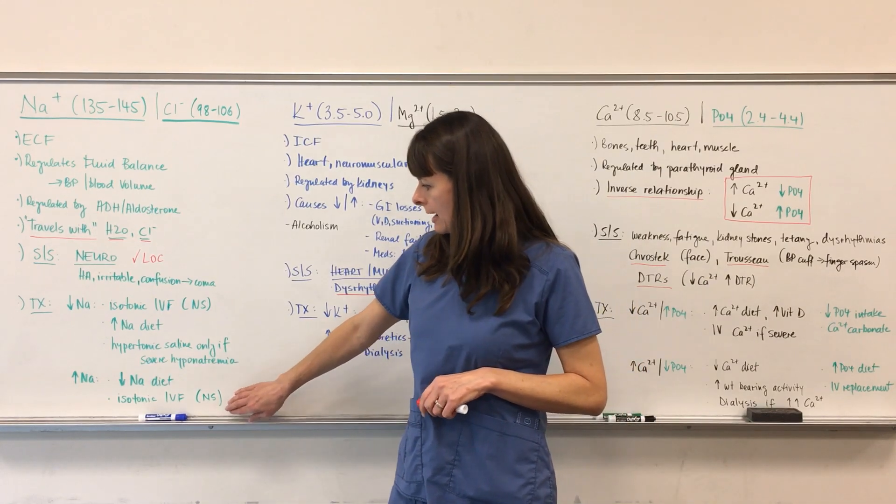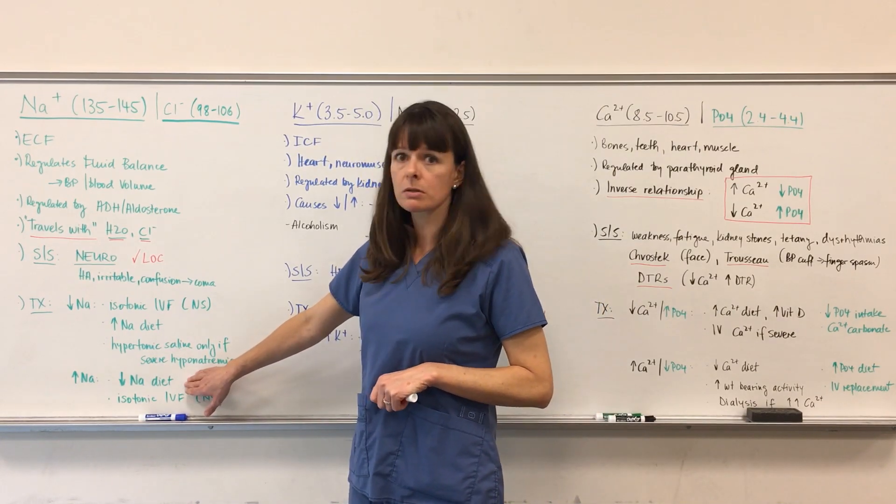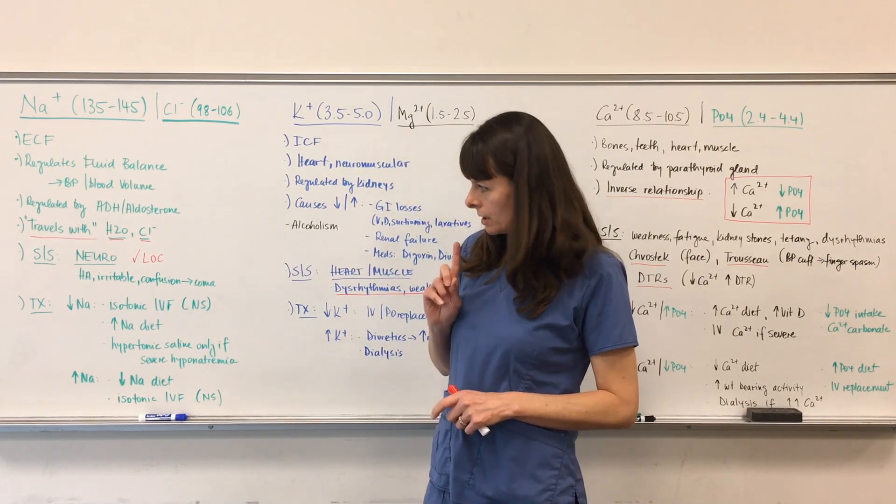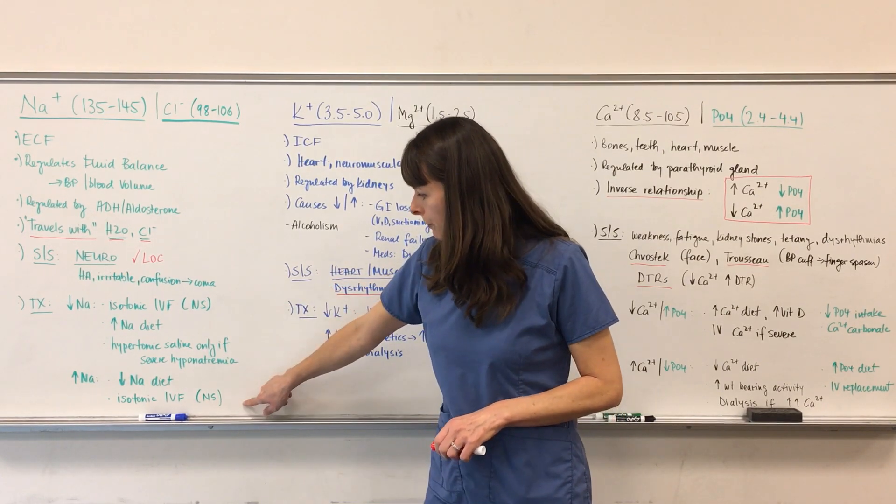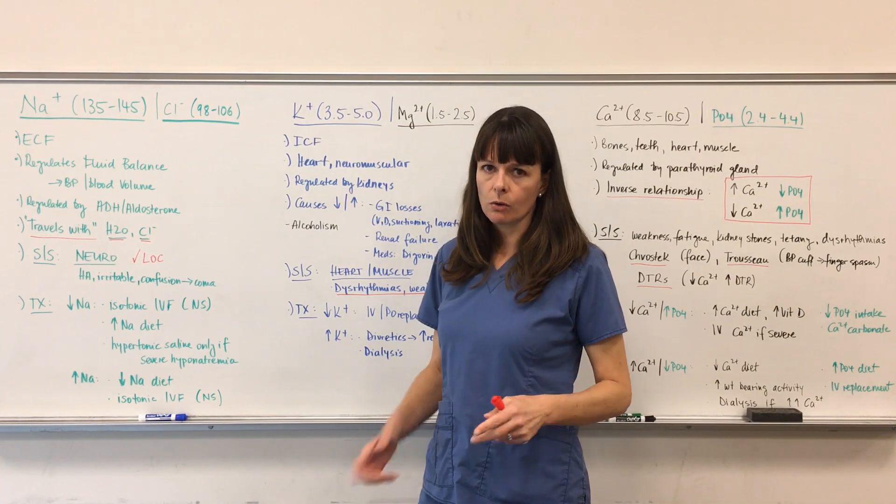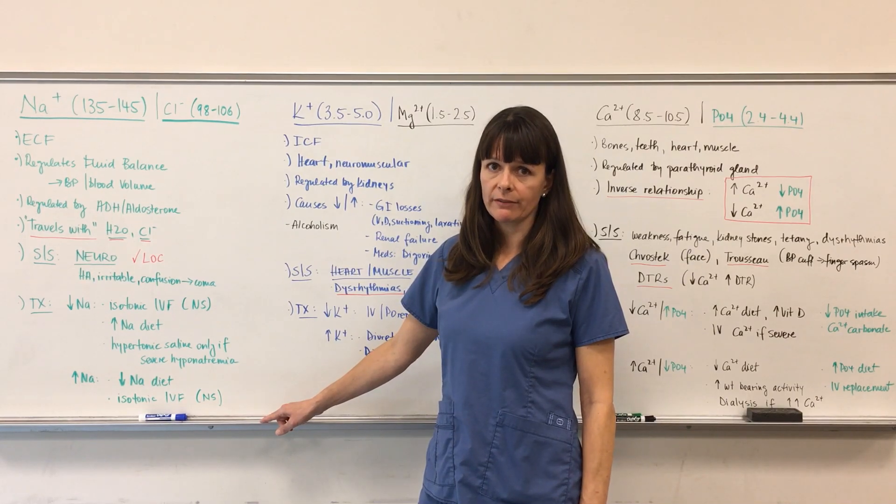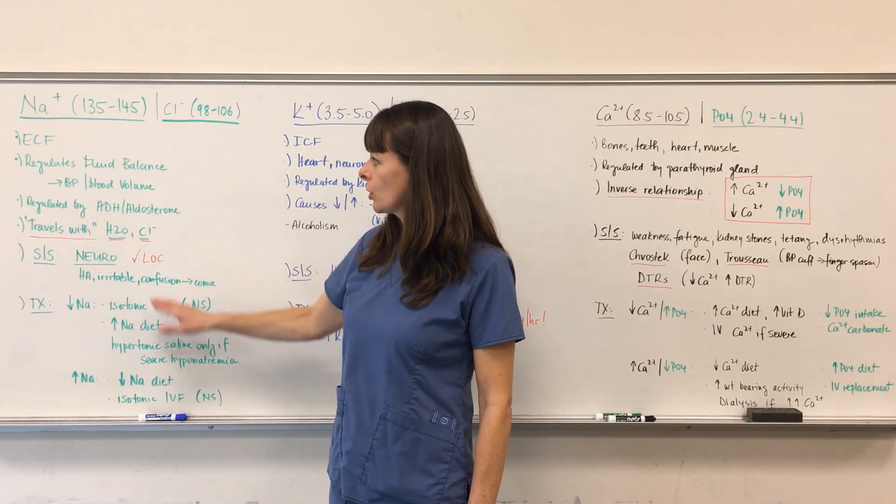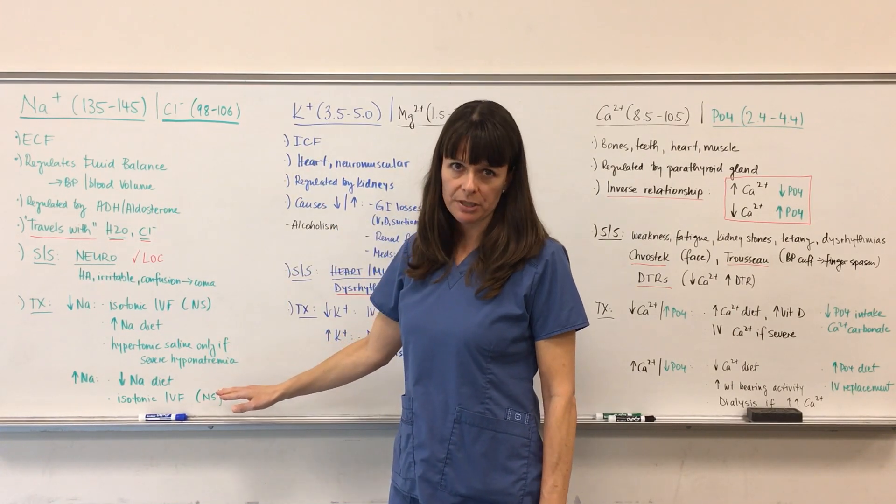If the patient has high sodium level, hypernatremia, then we want to reduce sodium in their diet and give them isotonic fluids to dilute that sodium. Isotonic IV fluids are both the treatment for low and for high sodium. It will depend on the severity, the level of the high or low sodium, and also on other factors as well as the rates we're going to administer these IV solutions. Because sodium and chloride are so closely related, signs, symptoms, and treatment for sodium and chloride imbalances are pretty much the same.